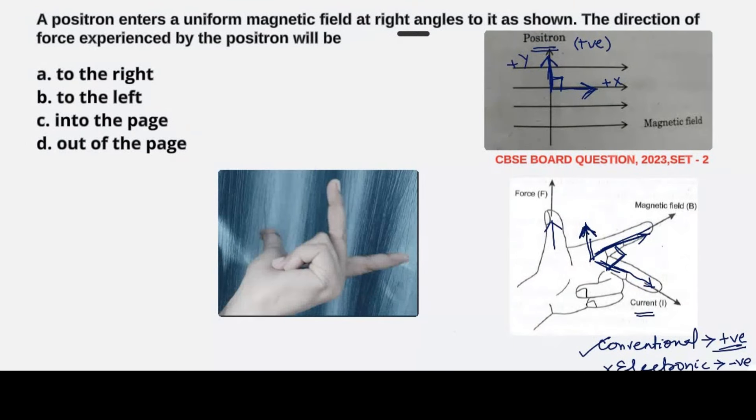As per this question, we have been given the positron is moving. That means the positive charge is moving, so this would be the direction of current. And magnetic field perpendicular to it will be along this direction. You can see here I have aligned this with my fingers.